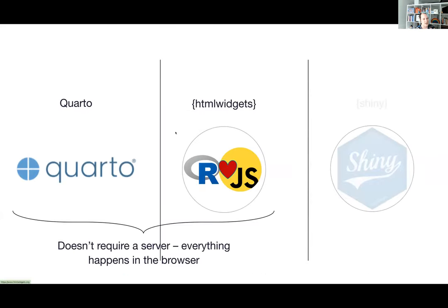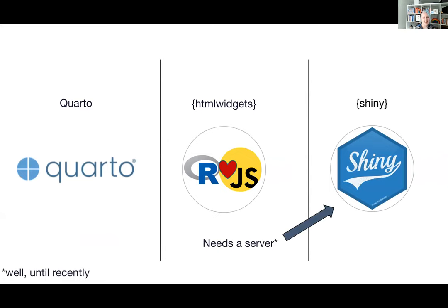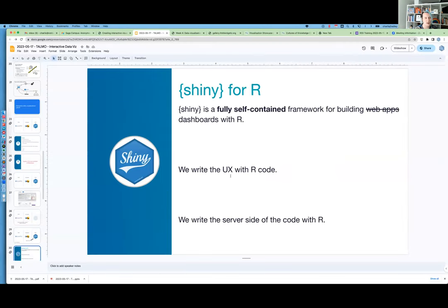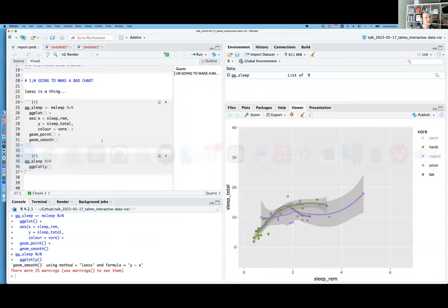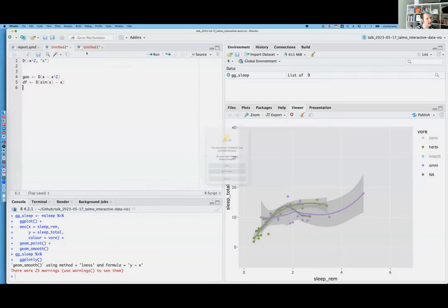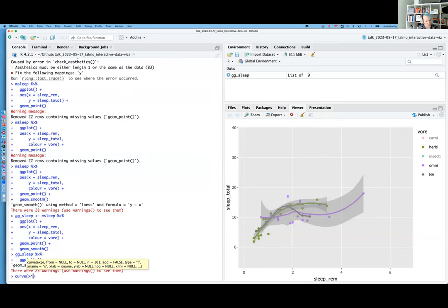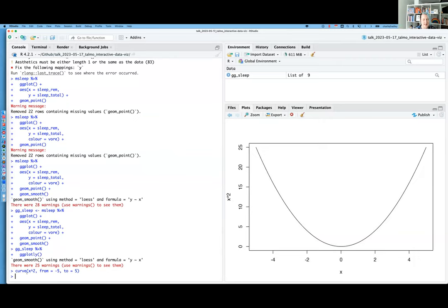Quarto and HTML widgets are really awesome tools and they don't require a server — everything happens inside the web browser. In Quarto, you knit your document together, it makes an HTML page, and you can upload it wherever you want. Then there's Shiny, which needs a server — with a small asterisk. Shiny allows us to build interactive web applications using R. It's a fully self-contained web framework. I'm going to build a Shiny app now.